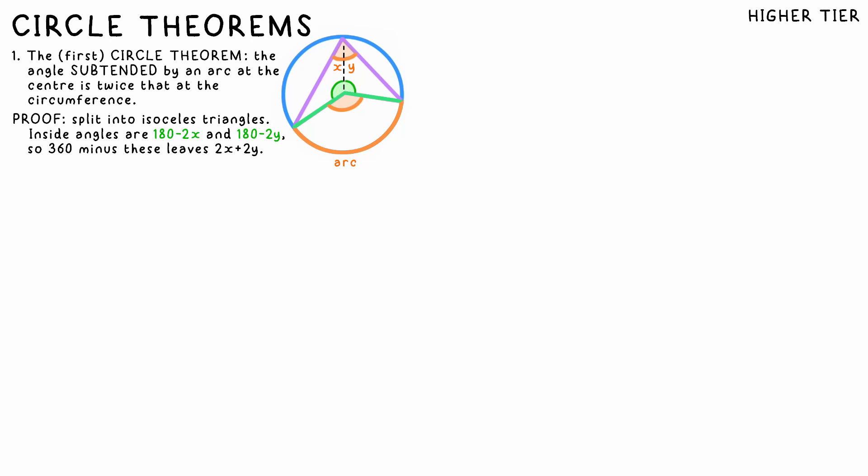The proof is this. Split the angle with the diameter and call the two separate angles x and y. We now have two isosceles triangles. As such, the other angles at the edge are x and y too.